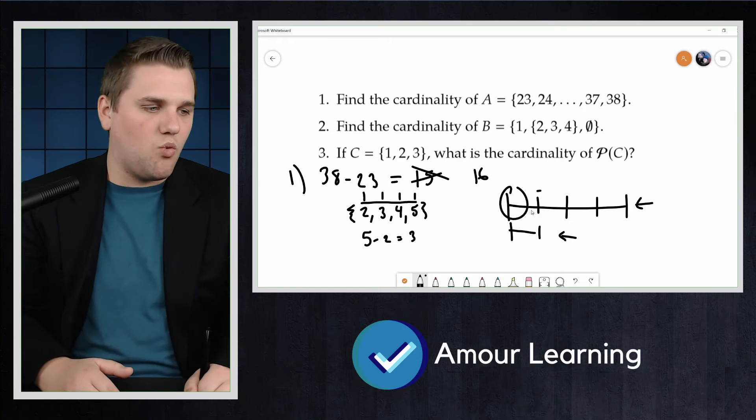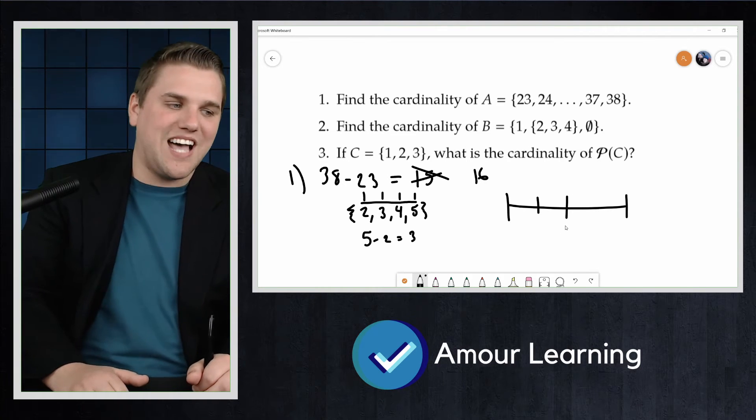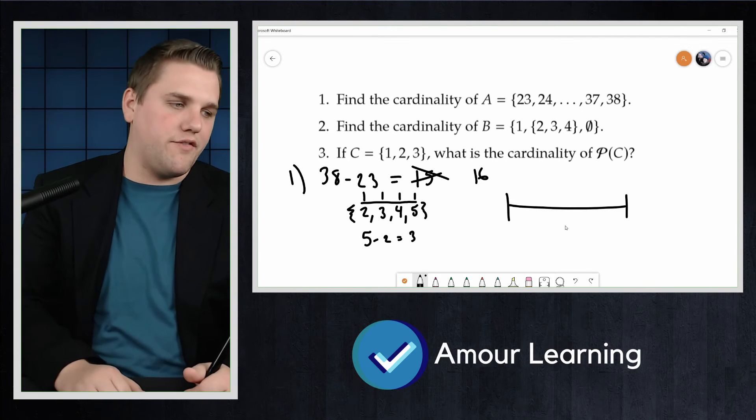But the number of ticks is 1, 2, 3, 4, 5 here. And so the number of tick marks is different from the size or the length of that set.